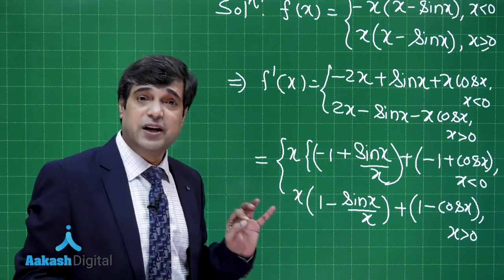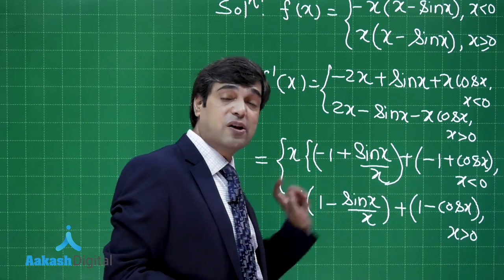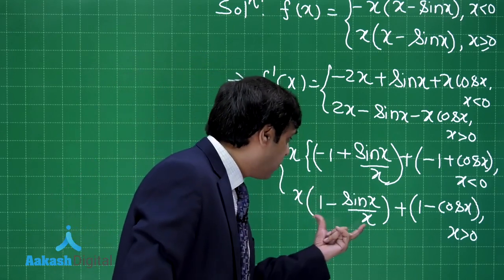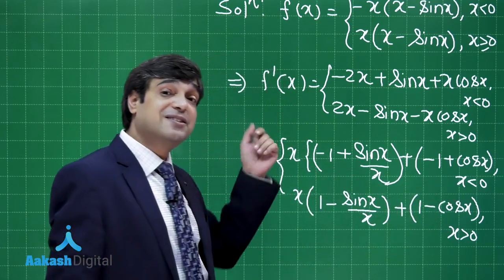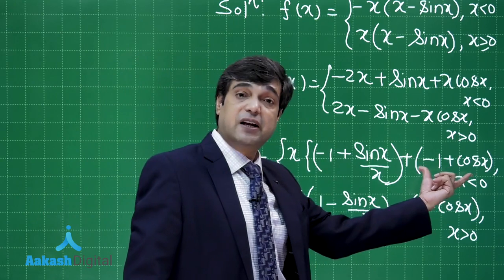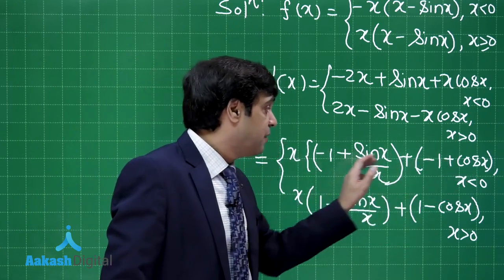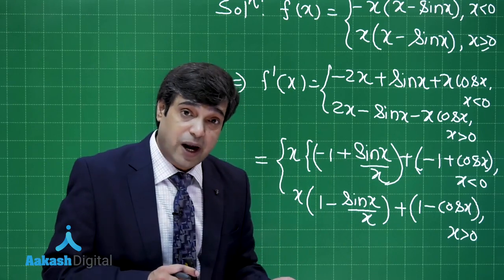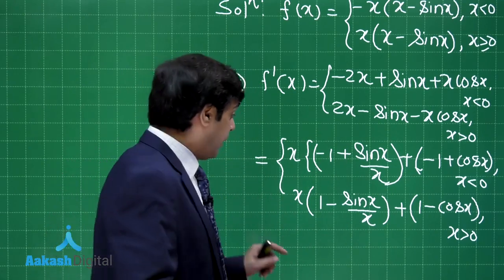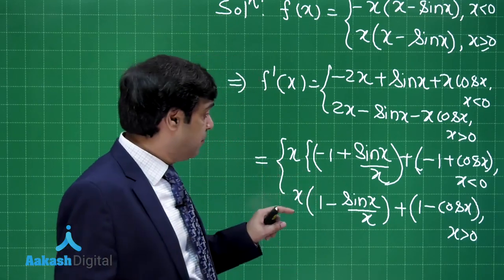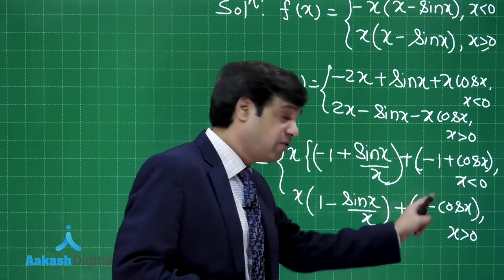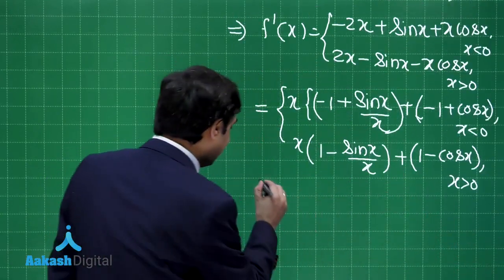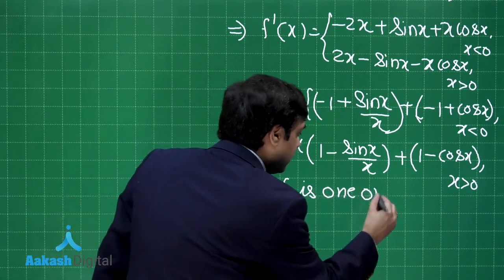We can recall the simple inequality from NCERT: sin x lies between cos x and 1 for x between −π/2 and π/2. Using this, for x > 0 the bracket is positive and f′(x) is positive. For x < 0 the bracket is negative but x is also negative, so f′(x) is again positive. Hence f is always increasing. Also, f(−x) + f(x) = 0, so the function is odd.